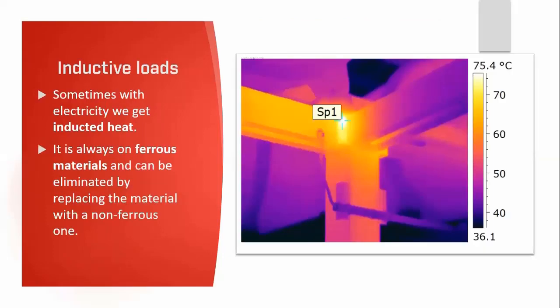In electricity we exploit induction, particularly in transformers using mutual induction. However, with so much AC electricity it's not unusual to find unwanted inducted heat on metalwork located near electrical components. Induction will take place on metalwork, and while it can be difficult to establish the exact reason, it occurs as a result of the location and proximity of the metal to the electricity. Poor design of electrical panels can create quite phenomenal induction patterns.